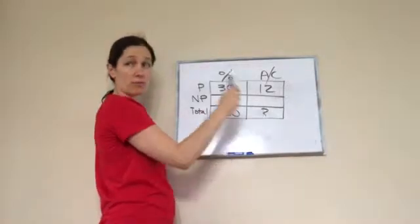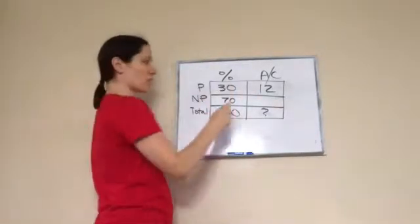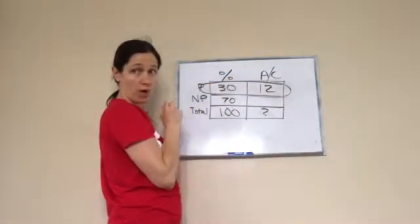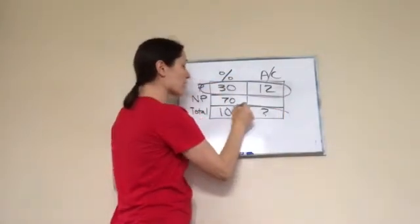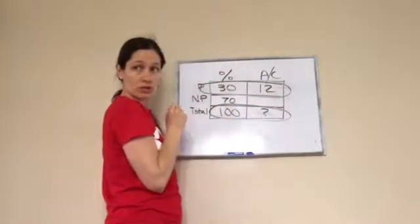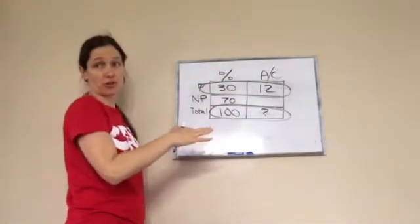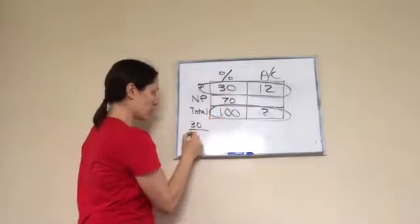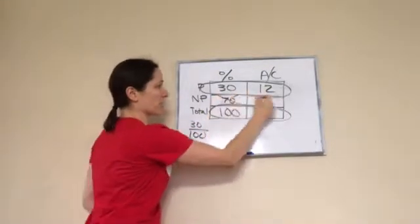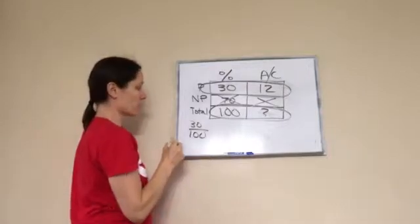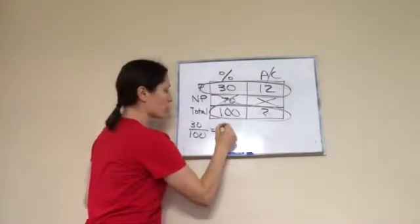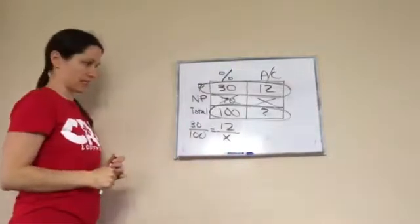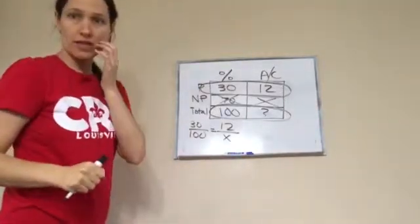We know this and this and we know this, but the only thing we don't know is this. So do you remember we took information that we know everything about a row and the row that we want to know about and we put them on top of each other? 30 over 100 equals 12 over X.